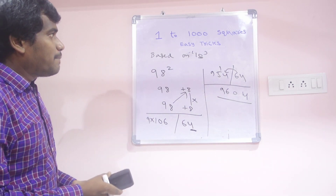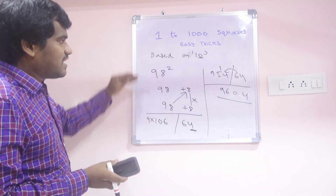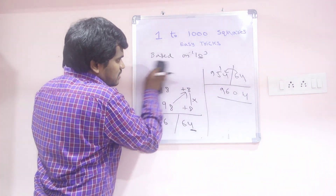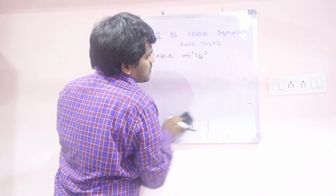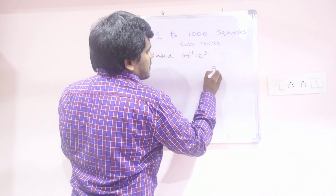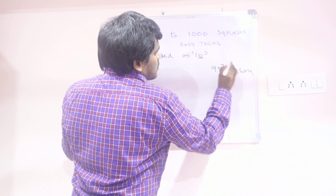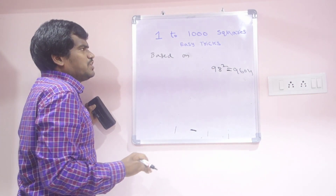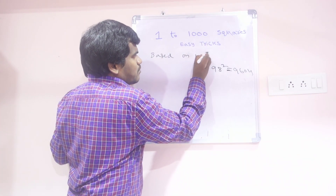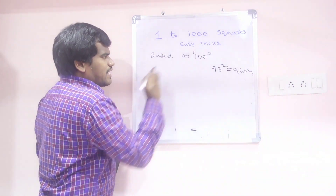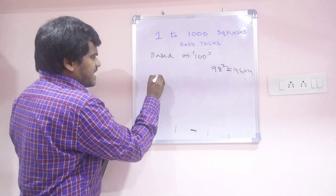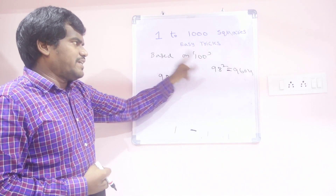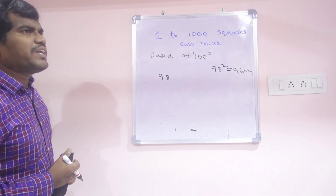Now we go for based on 100. Any number near to 100 we can find very easily. Same question: 98 square. Now 98 is near to 100 — how much less compared to 100? 2 less, so minus 2.